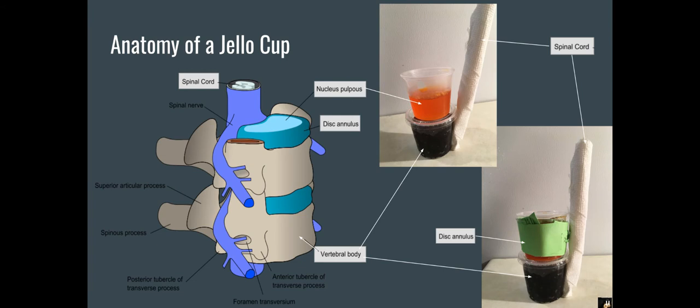The intervertebral disc is composed of the annulus fibrosis and the nucleus pulposus and is in between the vertebral bodies. The annulus fibrosis consists of 15 to 25 layers of fibrous bundles and is modeled using the layers of green construction paper.